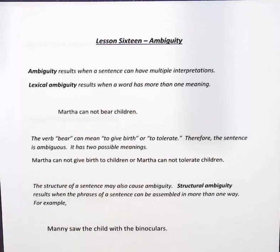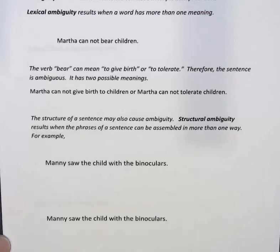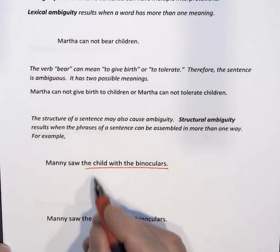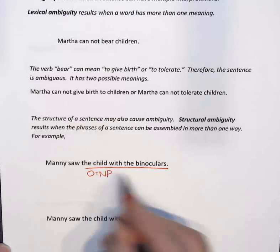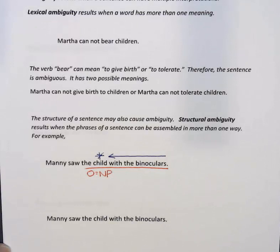Let me give you an example. Can you see two different possible meanings for this sentence? 'Manny saw the child with the binoculars.' One way to look at it is that the child had the binoculars — 'the child with the binoculars' is one noun phrase, serving as the object in the sentence, where 'with the binoculars' is a modifier of the child.